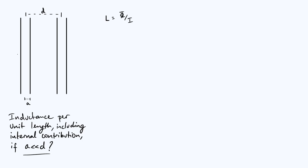I've written my current as I. We're going to have a current of I flowing up through the wire on the left. In reality, these two wires would be part of a circuit, carrying an electrical signal from one place to another. The current would be flowing in opposite directions in the two wires, so I'm going to put the same current I flowing down through the wire on the right hand side.